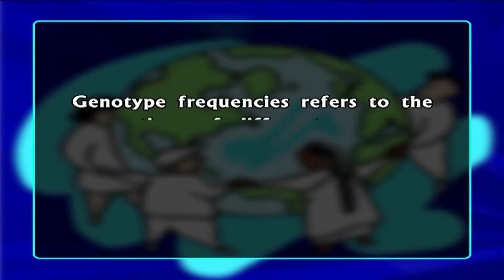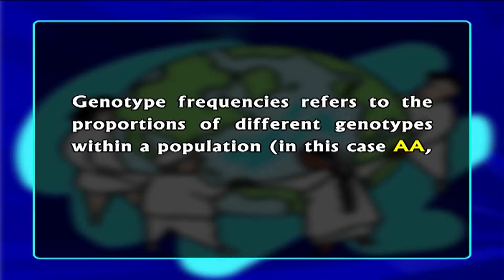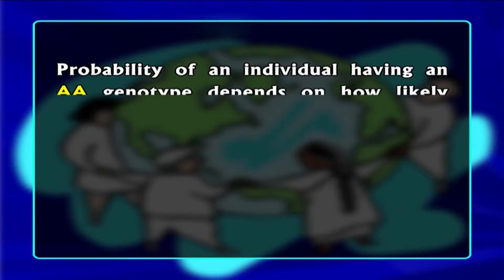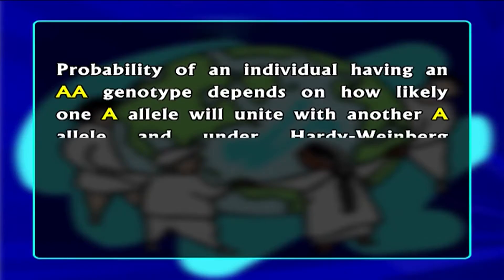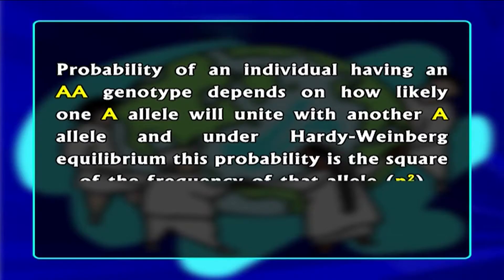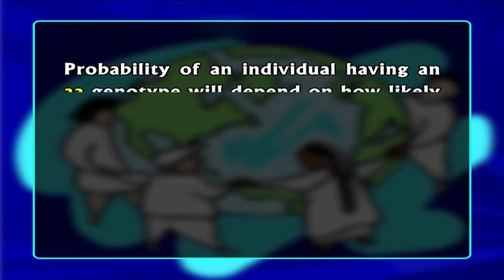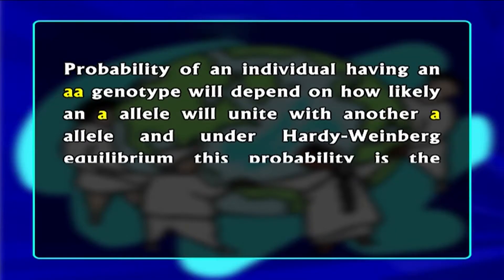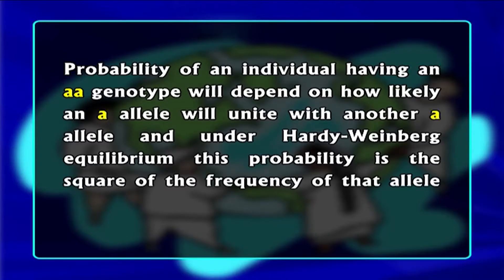Genotype frequencies refer to the proportions of different genotypes within a population. In this case, capital A capital A, capital A small a, and small a small a must add up to one. The genotype frequencies of such a population can be calculated from the allele frequencies, because the probability of an individual having a capital A capital A genotype depends on how likely it is that one capital A allele will unite with another capital A allele. Under Hardy-Weinberg equilibrium conditions, the probability of a small a small a genotype is the square of the frequency of that allele — that means q².